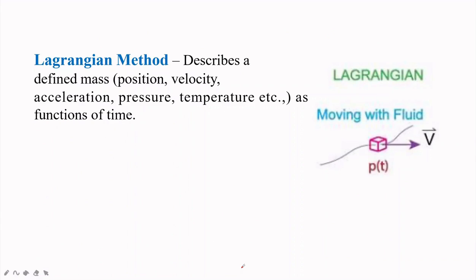In the Lagrangian method, a single fluid particle is followed during its motion — consider P(t) as a fluid particle. It is followed as it moves in any direction. The single fluid particle is followed during its motion, and its velocity, acceleration, pressure, density, etc. are described at a point in the flow fluid. So in the Lagrangian method, whenever we have to find the velocity, acceleration, pressure, or density, we have to follow this particle in motion with the fluid.